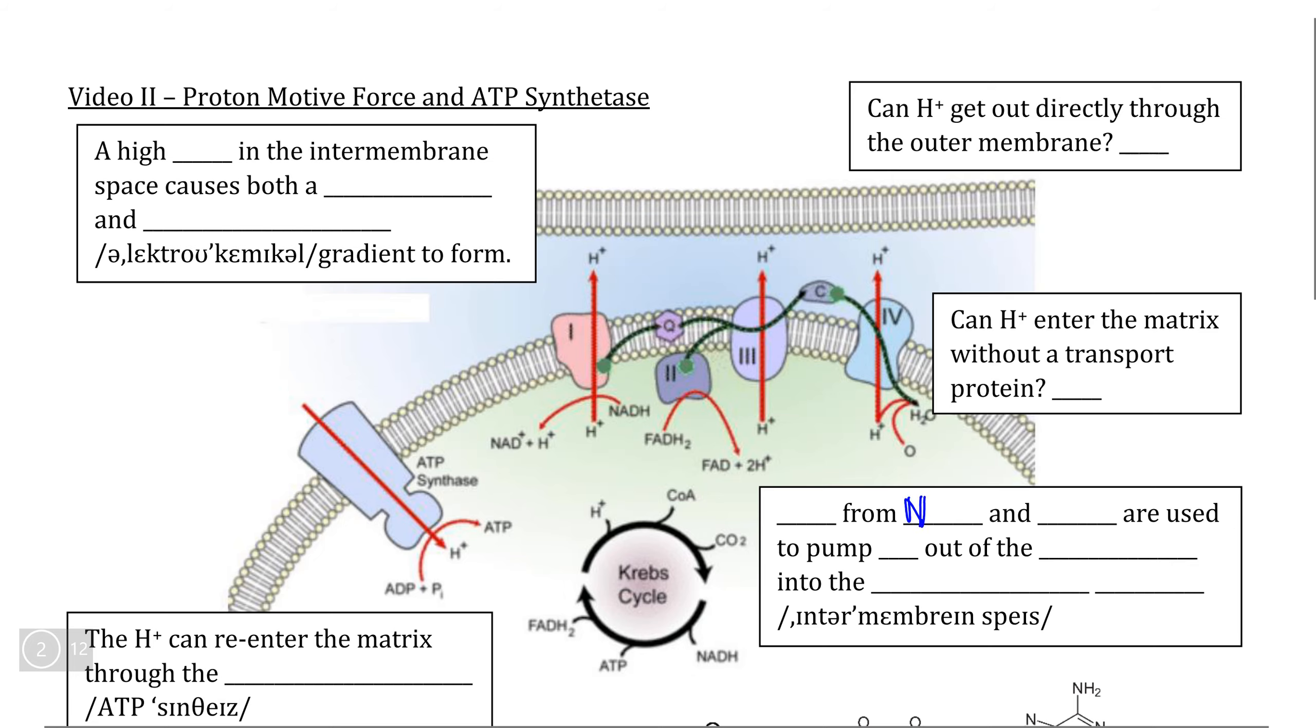The most important reactant molecules in the electron transport chain are our electron carrier molecules, NADH and FADH2, produced mostly in the Krebs cycle but also in the cytoplasm via glycolysis.